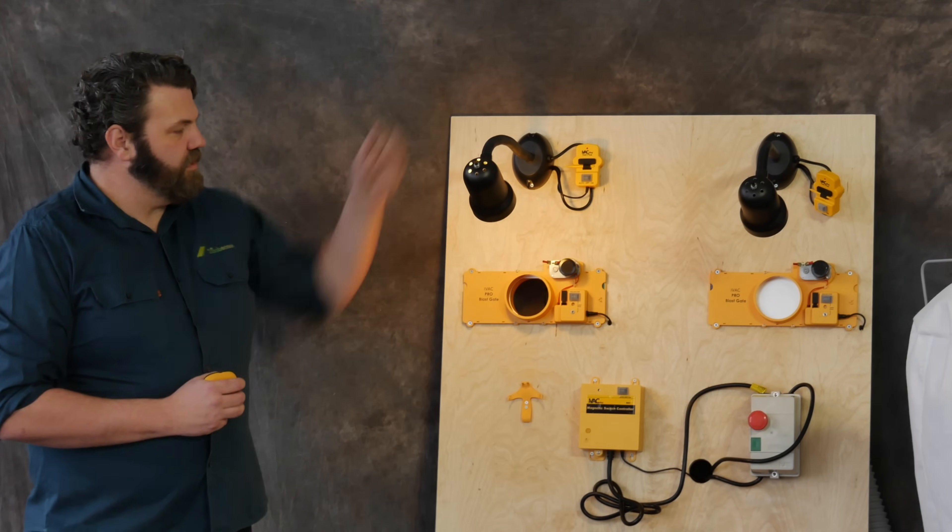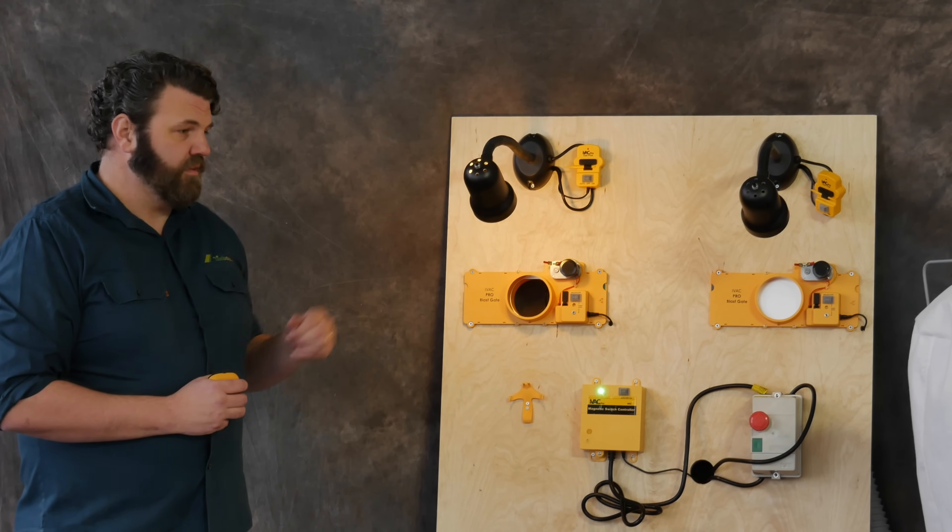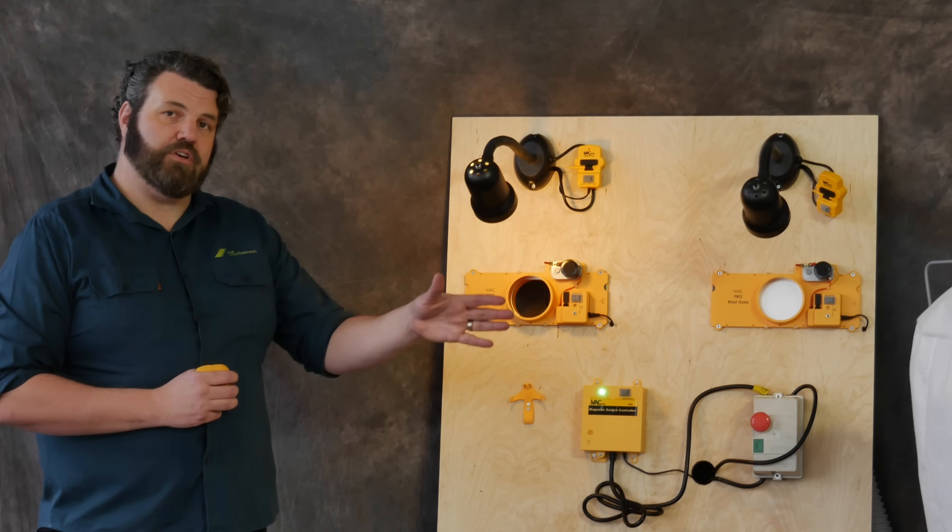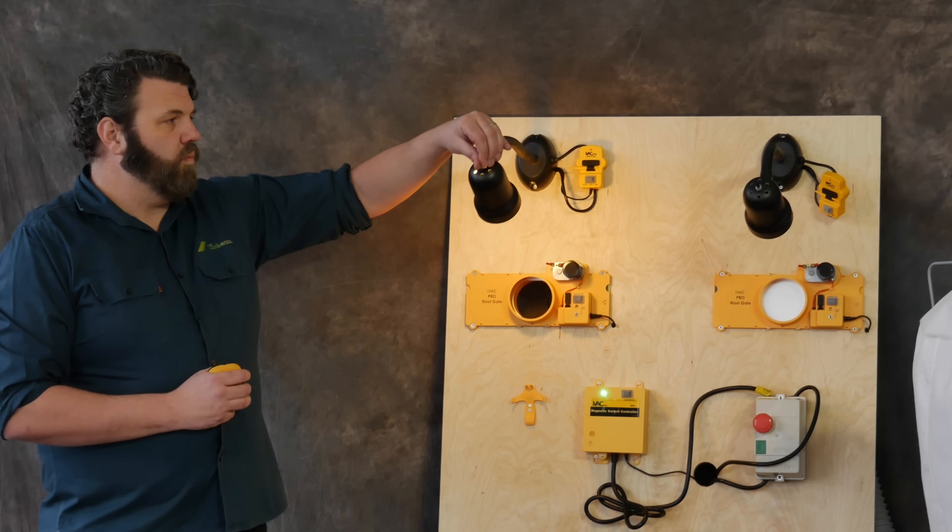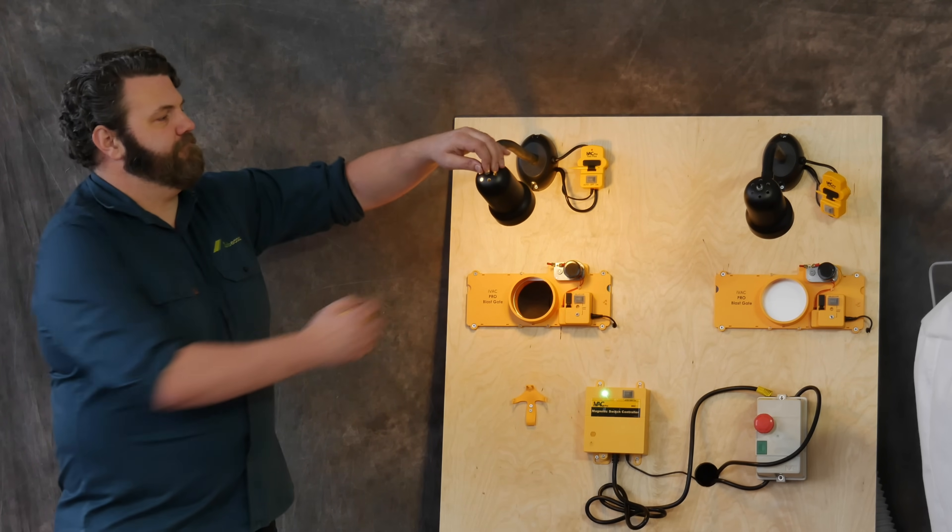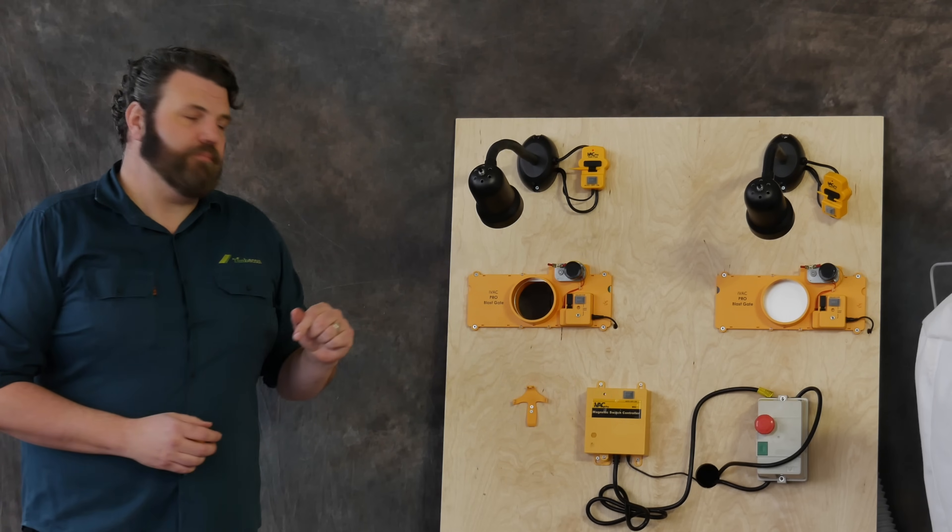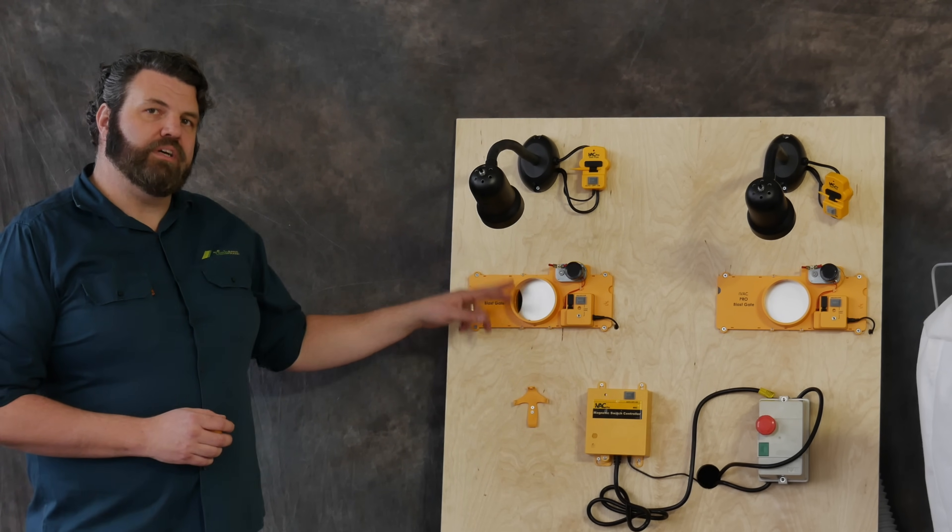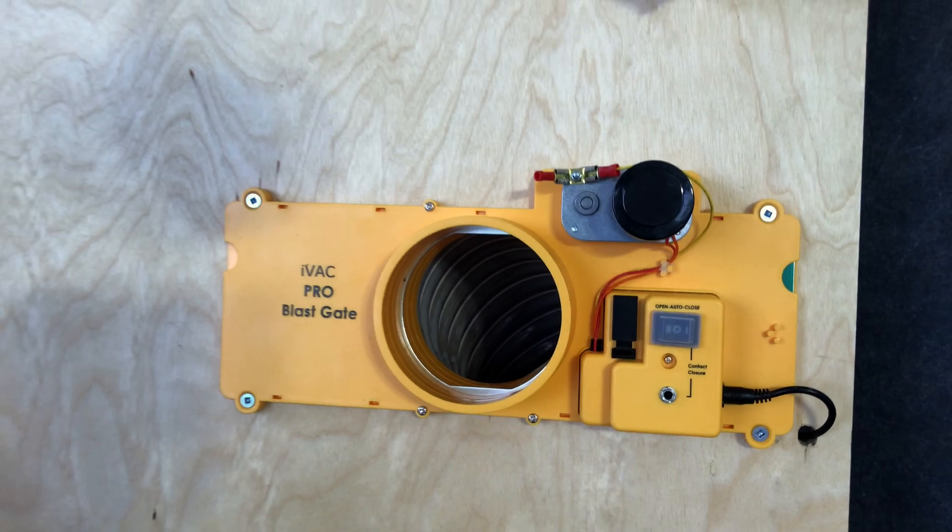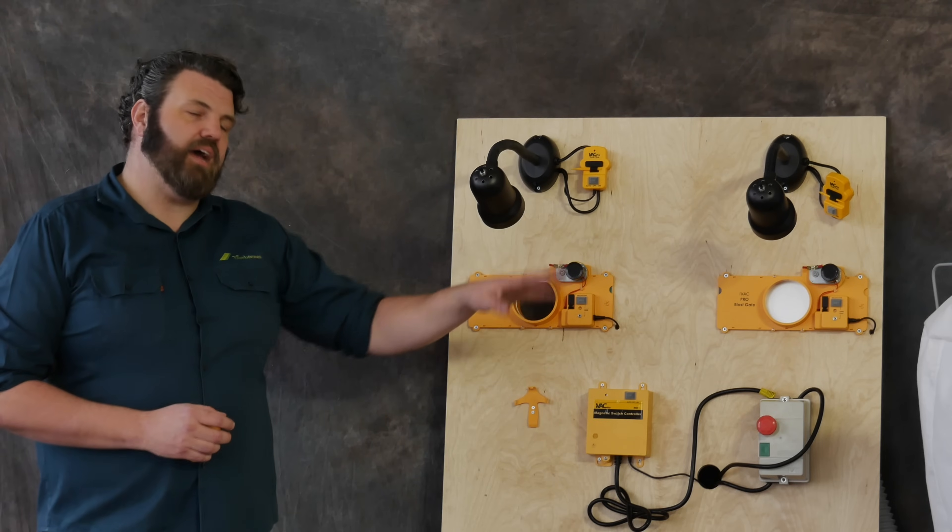For instance, this is what you would call line one. When you turn this on, the extractor turns on immediately because the blast gate is already open. When you turn this off again, it closes the blast gate, realizes there's not one open, so it reopens and then it turns the dust extractor back off again.